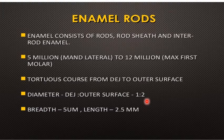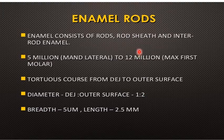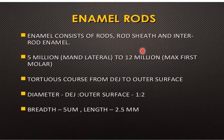The structure of enamel is composed of three components: the enamel rod, the interrod substance, and the rod sheath. The rod and interrod substance are composed of hydroxyapatite crystals, formed by the Tomes' process of the ameloblast during the secretory stage, as discussed in the previous lecture.